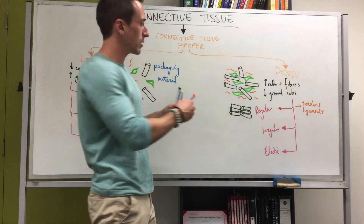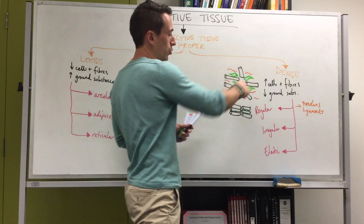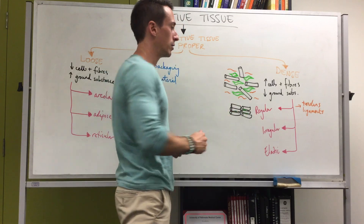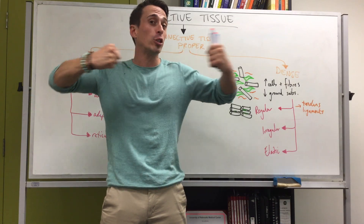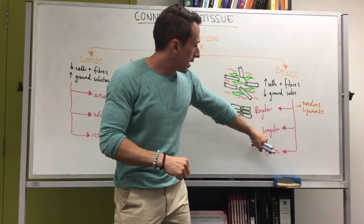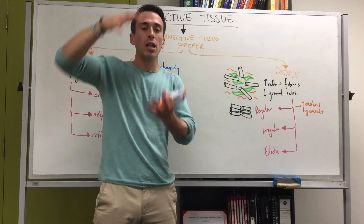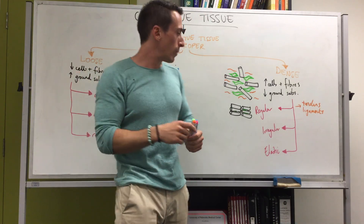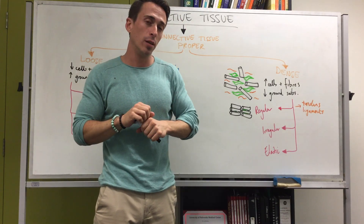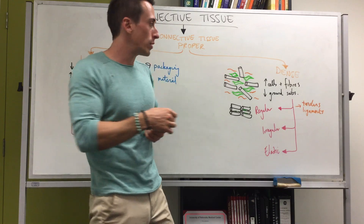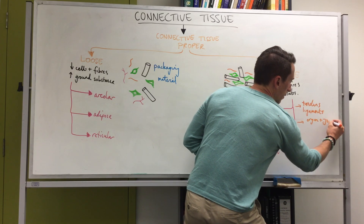Dense irregular also has a high quantity of collagen fibers, but in irregular patterns. The reason these differ is that dense regular provides resistance to tension in one particular direction only, whereas dense irregular — because of the irregular patterning of collagen fibers — can sustain tension in many different directions. This means dense irregular connective tissue is found lining the ends of bones and cartilage, and forms organ capsules and joint capsules.